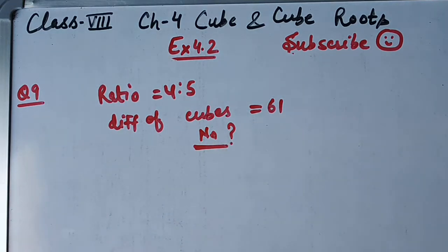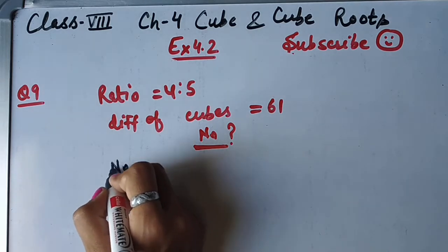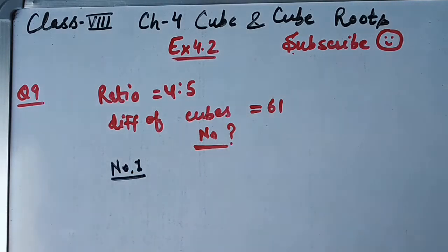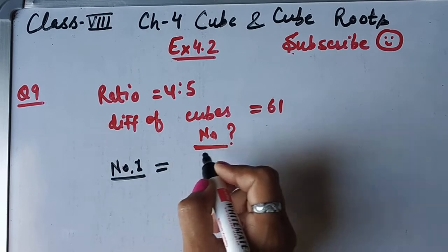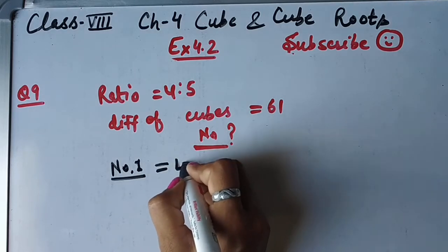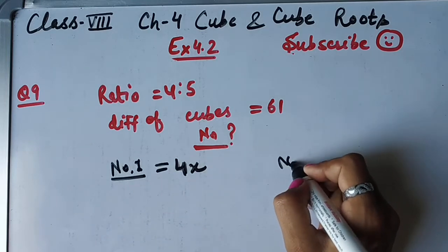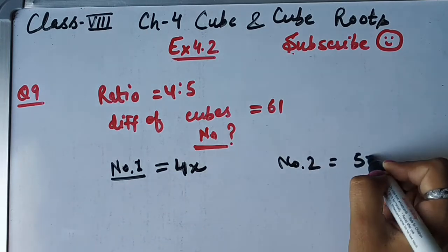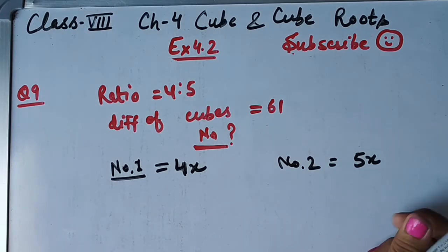Ratio given hai, toh ratio se numbers nikaal sakte hain. Jab number nikalna hota hai toh kisi ek variable se multiply kar lete hain. Toh 4 ko multiply karenge x se, toh number 1 aaya 4x aur number 2 aayega 5x. Same variable se karna hai, alag-alag se nahi kar sakte.